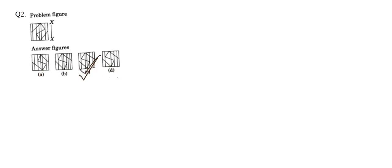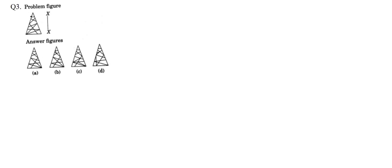Now let's move on to question number three. Again, we have a triangular figure. We will use the same method — consider the corner and count the number of lines coming out. At the left corner of the base, we have two lines: this is the first line and this is the second line. So in the options, we need to consider the right base and check how many lines come out. In A we have two, in B we have two, in C we have two — but in D we have only one line. So D cannot be the answer.